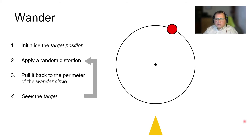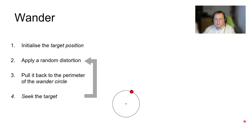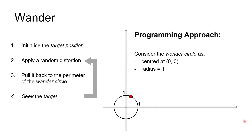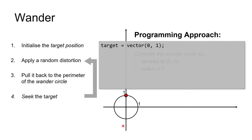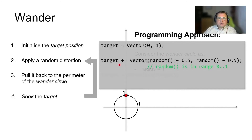So all this looks logical, but the big question is what kind of programming approach should we apply to get this working in C++. The programming approach is based on two considerations. First, the wander circle will be centered at position (0, 0) of the coordinate system and its radius will be equal to 1. This simplifies a lot: the initialization of the target becomes very simple as the initial coordinates are (0, 1). Application of random distortion is just adding to the target a vector with two random coordinates, where random returns a value between 0 and 1.